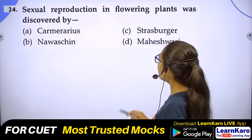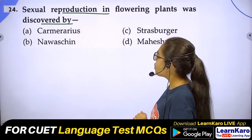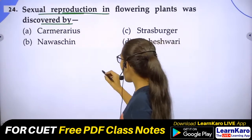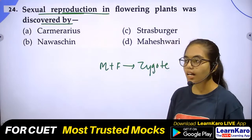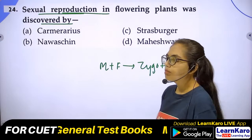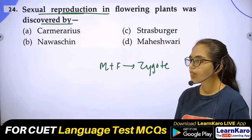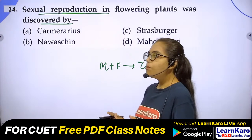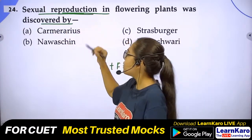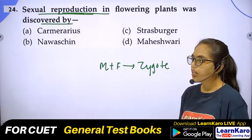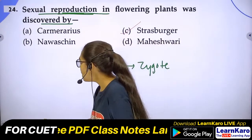Question 24: Sexual reproduction in flowering plants was discovered by whom? Note: double fertilization was discovered by Nawaschin. Here the question is about who discovered sexual reproduction in flowering plants — who first explained male gametes, female gametes, zygote formation, and development. The correct answer is Strasburger.